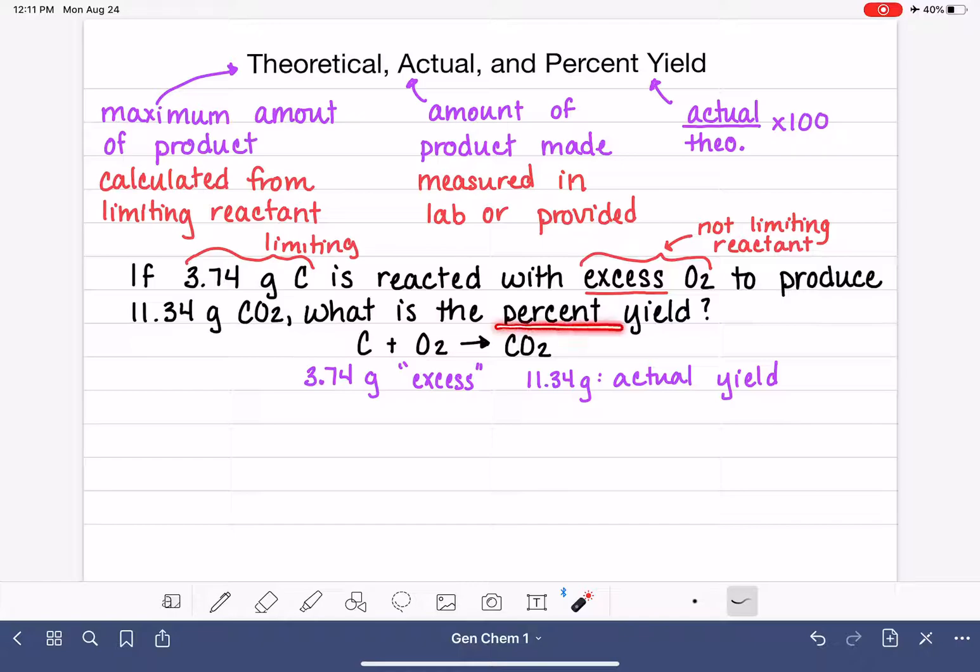Now this problem is asking us to calculate the percent yield. This is the equation that we use to calculate percent yield. And we already have half of what we need to solve that problem. We know the actual yield. So all we have to calculate in this problem is the theoretical yield. And then we can plug both of those in to get the percent yield.